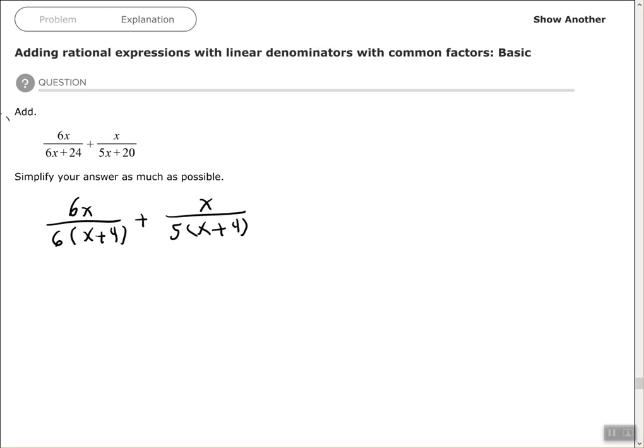Look at that first fraction—the numerator and denominator have a common factor of 6, so I can cancel out those 6s and simplify that to x over x plus 4 plus x over 5 times x plus 4.